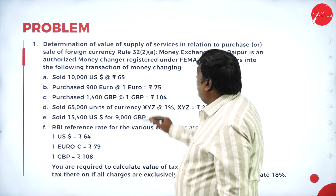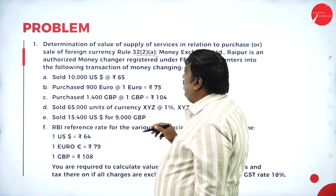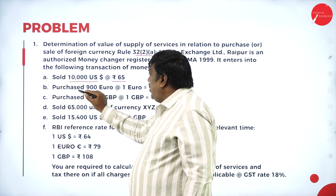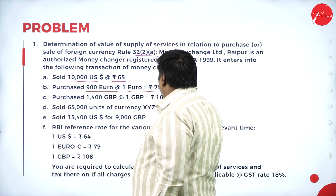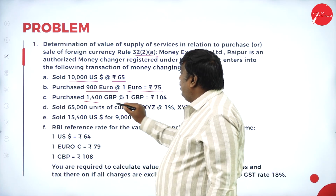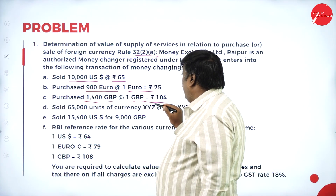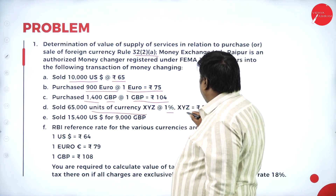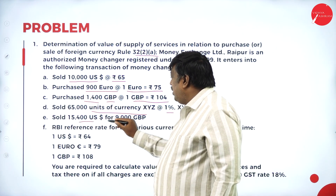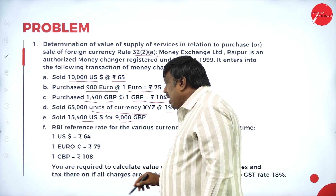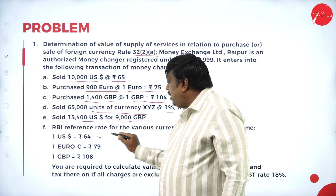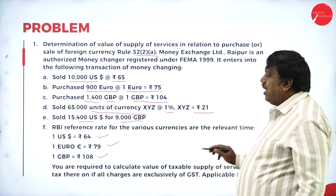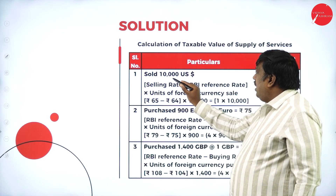Let us solve a problem on Rule 32 sub-clause A and B. The transactions are: sold 10,000 US dollars at ₹65; purchased 900 euros at ₹75 per euro; purchased 1,400 GBP at ₹104 per GBP; sold 65,000 units of currency XYZ at ₹21; sold 15,400 US dollars for 9,000 GBP. The RBA reference rates given are: US dollar ₹64, euro ₹79, GBP ₹108.